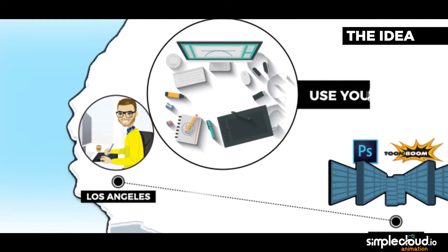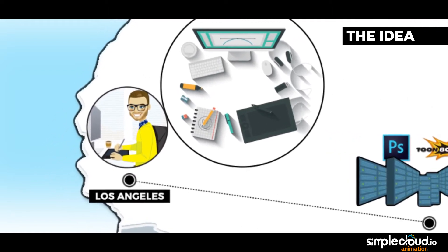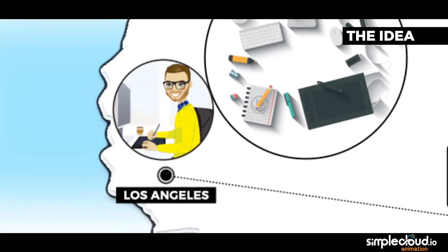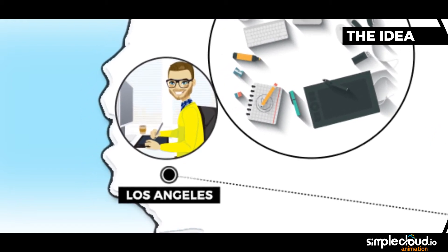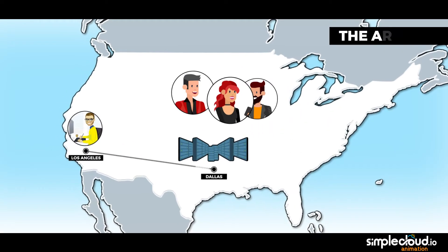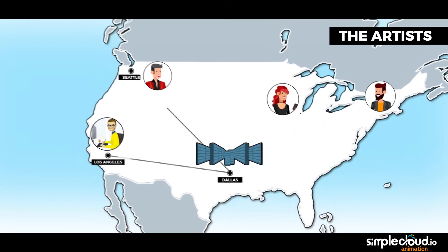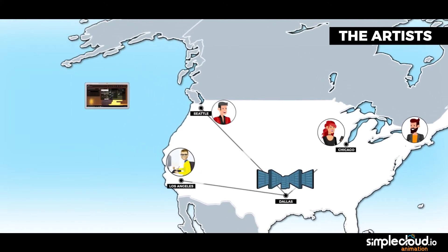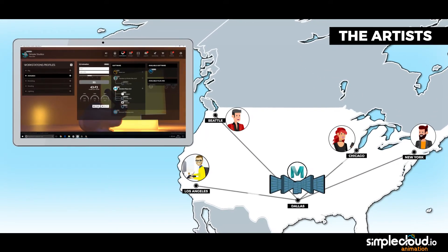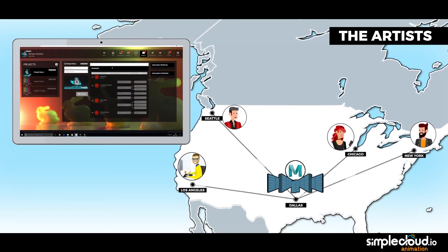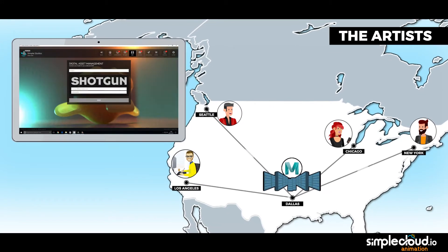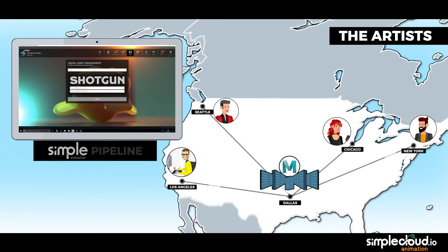After the script is finished, he starts working on the main characters. But it's a huge task for a single person. As John works in the industry, he has quite a few friends who really liked his project. So he creates a new workstation profile with Autodesk Maya and invites his friends to his studio, assigning them the necessary access rights in one click.